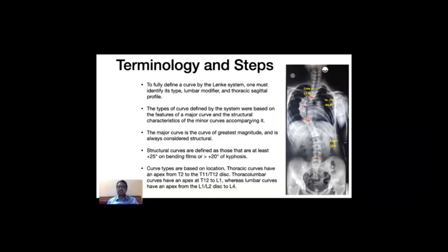If an X-ray is given with two curves, there is a major curve and a minor curve. A curve of larger magnitude is considered the major curve, and by default the major curve is considered to be structural. In this case, the thoracic curve is of larger magnitude at 60 degrees, so it is the major curve. There are adjacent curves which may exist — for example, a proximal thoracic curve of 24 degrees and a lumbar curve of 32 degrees — and these are treated as minor curves.